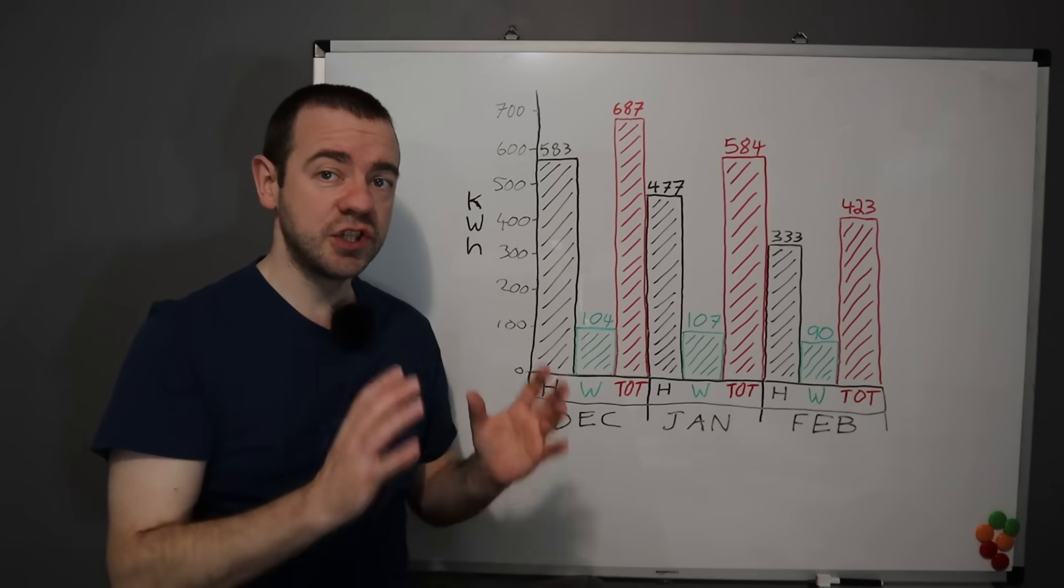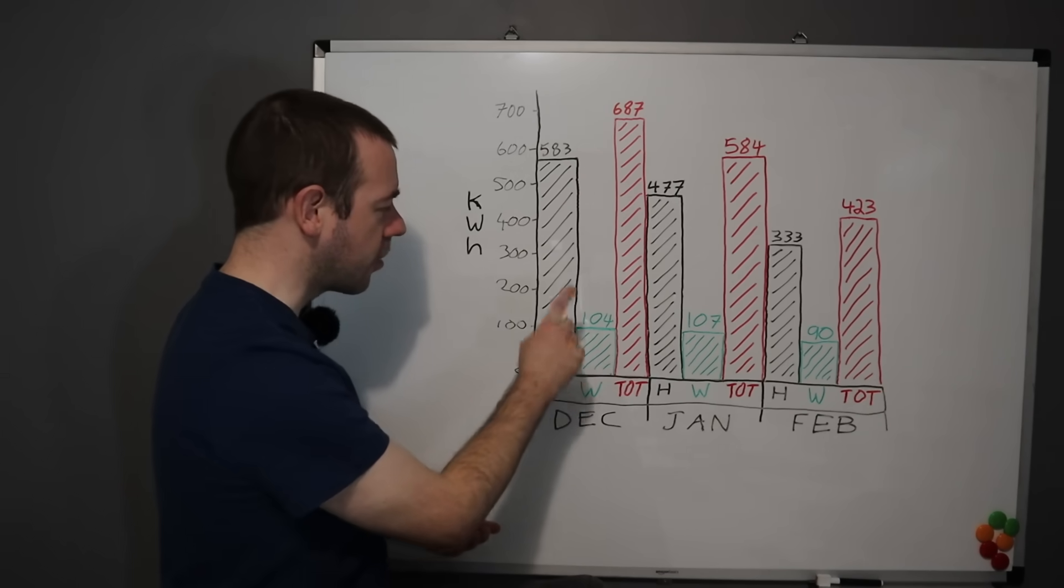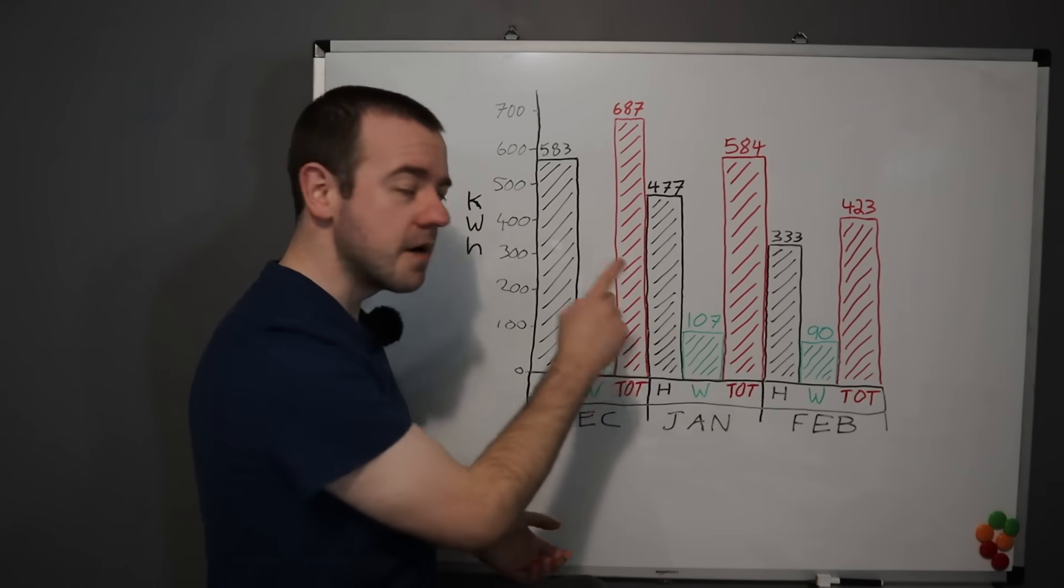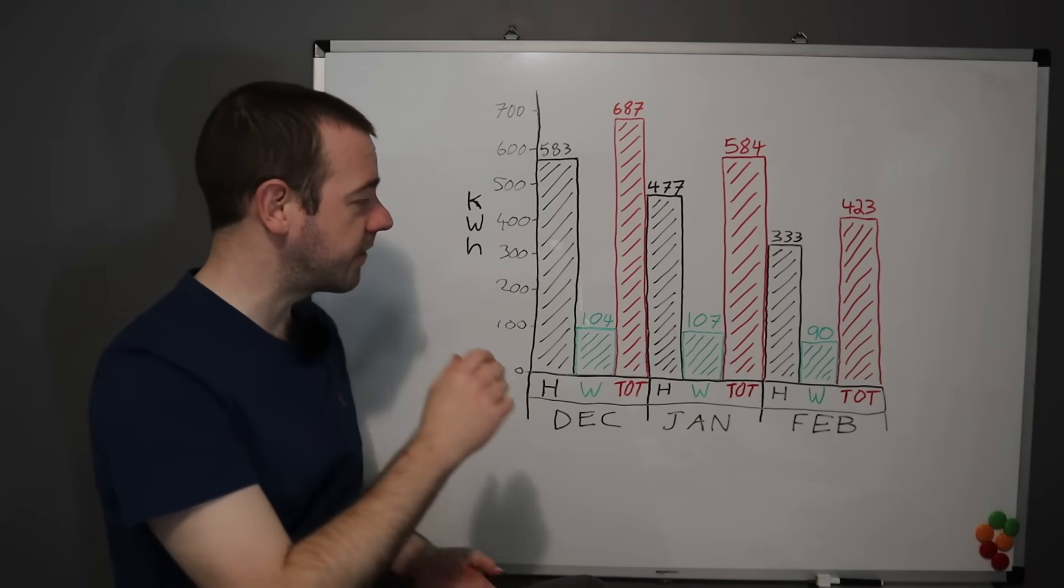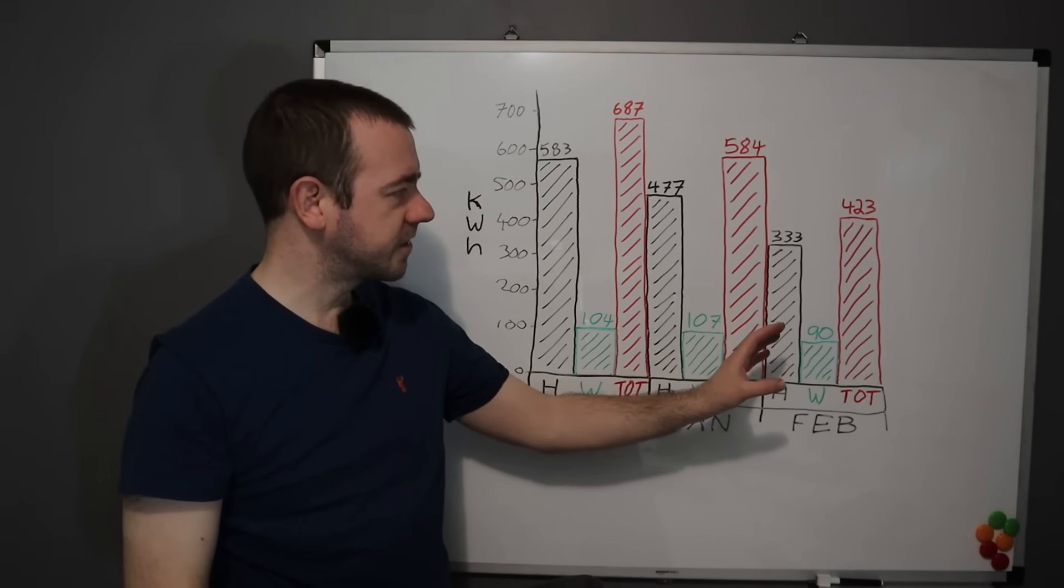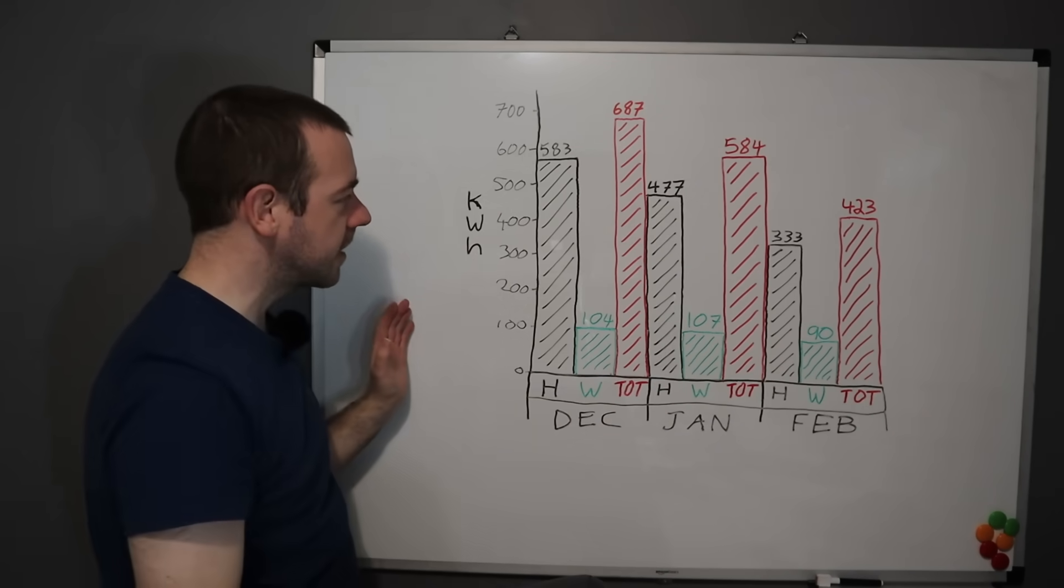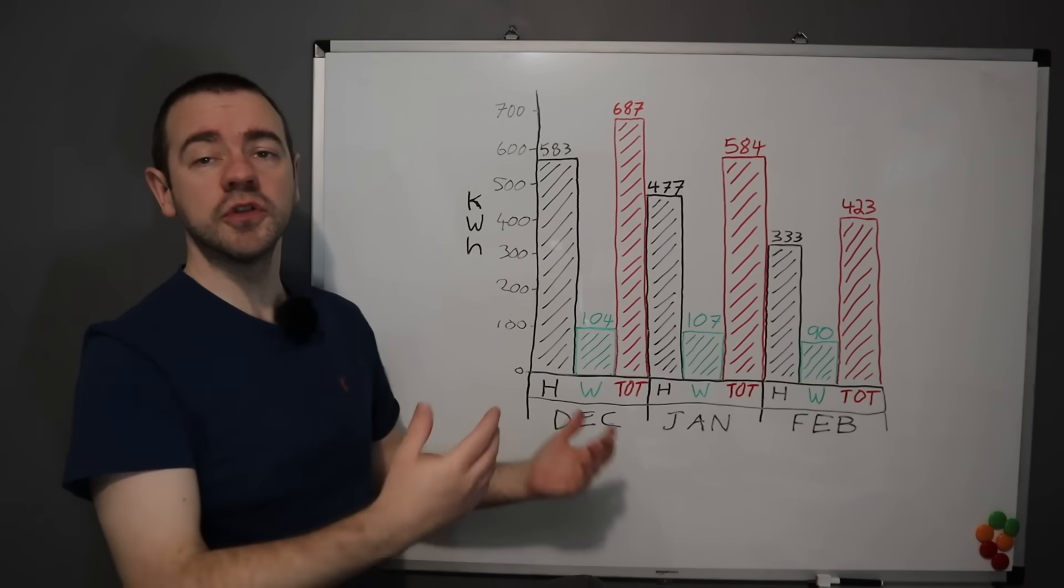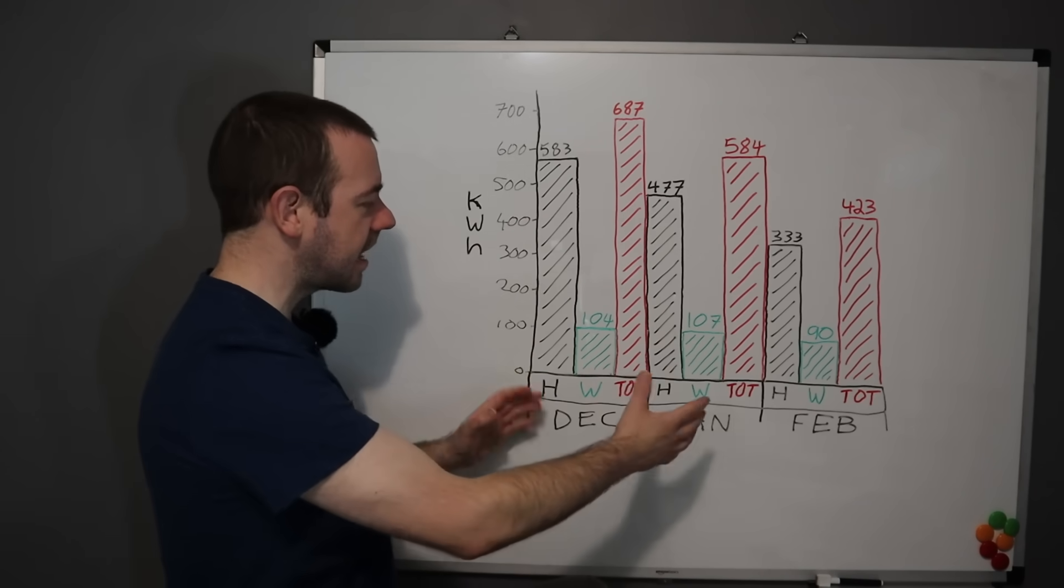I would say this is probably worst case scenario for a typical British winter rather than an average. You can see the hot water usage is pretty much the same each month. That is done at night, just once, unless we need to boost it for whatever reason like if we've got people over and we need to top it up.